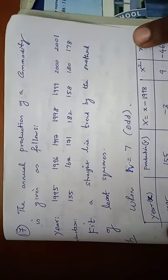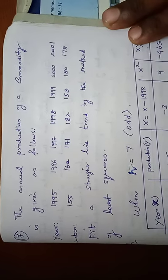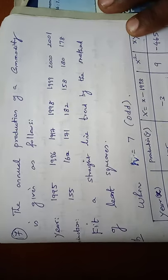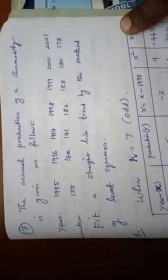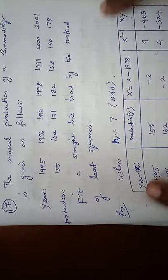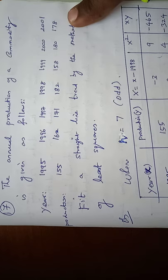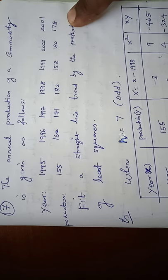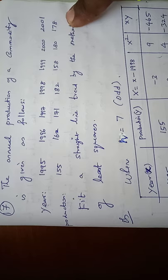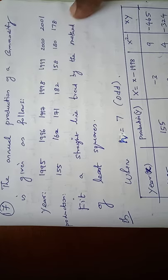Sum number 17. The annual production of a commodity is given as follows: Year 1995, 1996, 1997 up to 2001. The production values are 155, 162, 171, 182, 158, 190, and 178.